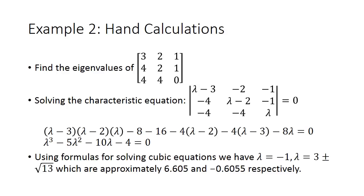For our next example, we'll find the eigenvalues of a 3 by 3 matrix: 3 2 1, 4 2 1, and 4 4 0. Solving the characteristic equation by taking the determinant of lambda I minus A equals 0 gives the cubic: lambda cubed minus 5 lambda squared minus 10 lambda minus 4 equals 0. Using cubic formulas, lambda can be negative 1, or 3 plus or minus the square root of 13, approximately 6.605 and negative 0.605.